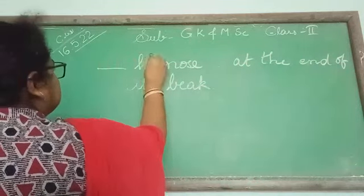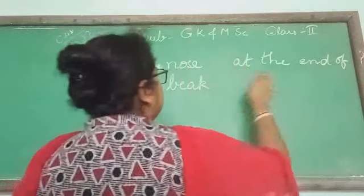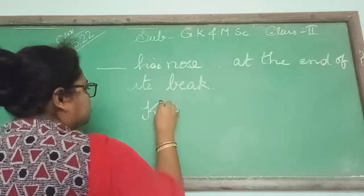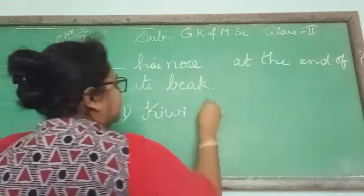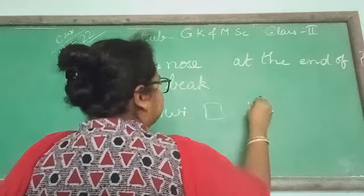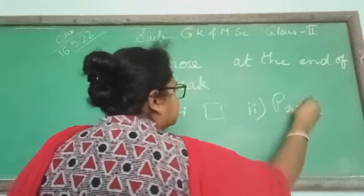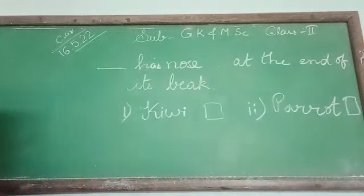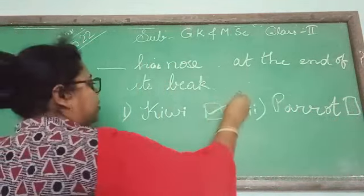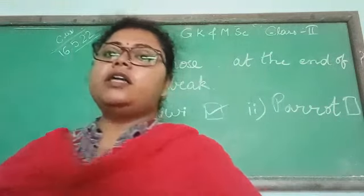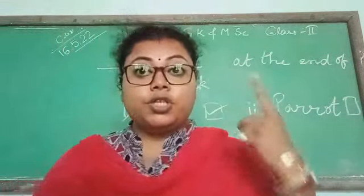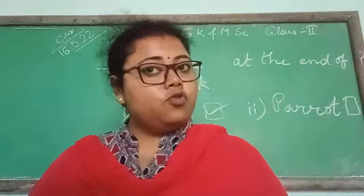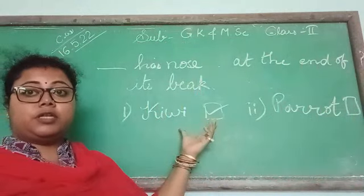Dash has a nose at the end of its beak. Two options are given: kiwi as option one, and then parrot. You can understand which one is the correct word. You will tick the correct word. So we have done short answer, fill in the blank, true-false, and choose the correct answer.